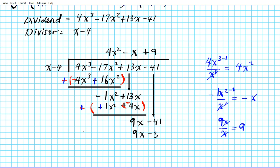We subtract again — division is repeated subtraction. Distributing the minus sign: this becomes plus and that minus changes to plus. Adding downwards: negative 41 plus 36 gives us negative 5. That's our remainder.